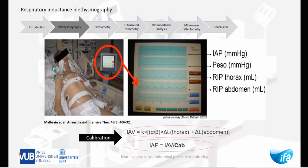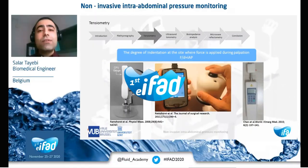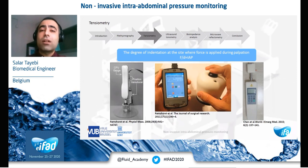As can be seen in this monitor, abdominal and thoracic volume changes are tracked by means of plethysmography and abdominal pressure is calculated based on the principle explained. Now let's go to the next technique, tensiometry, which is a kind of palpation to examine the required force to generate a specific displacement on the abdominal wall, and is dependent on abdominal compliance as well. The main idea is that abdominal pressure influences abdominal compliance, and tensiometry reflects both abdominal compliance and abdominal pressure.